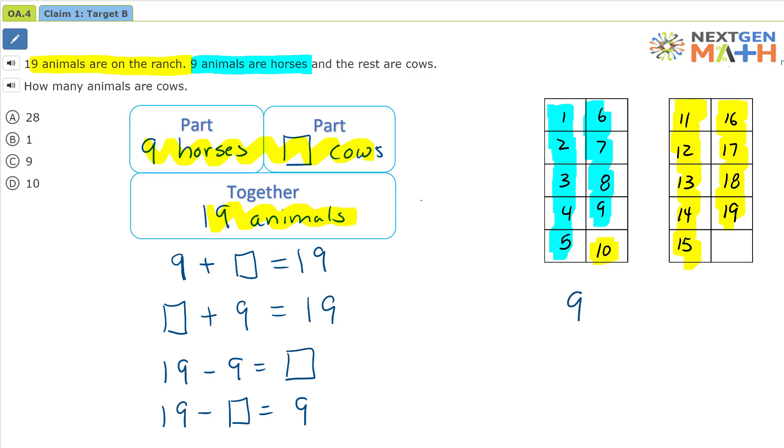So we have nine horses plus how many cows? Well, the cows are the yellow squares. This is the yellow square. These are the cows. The horses were the blue squares.